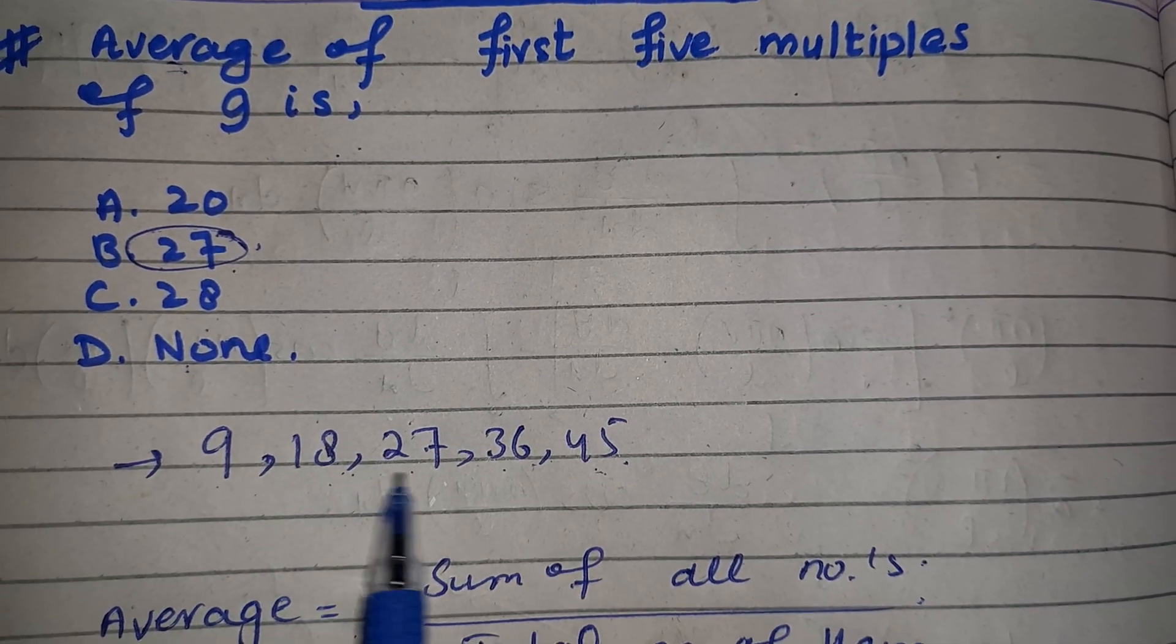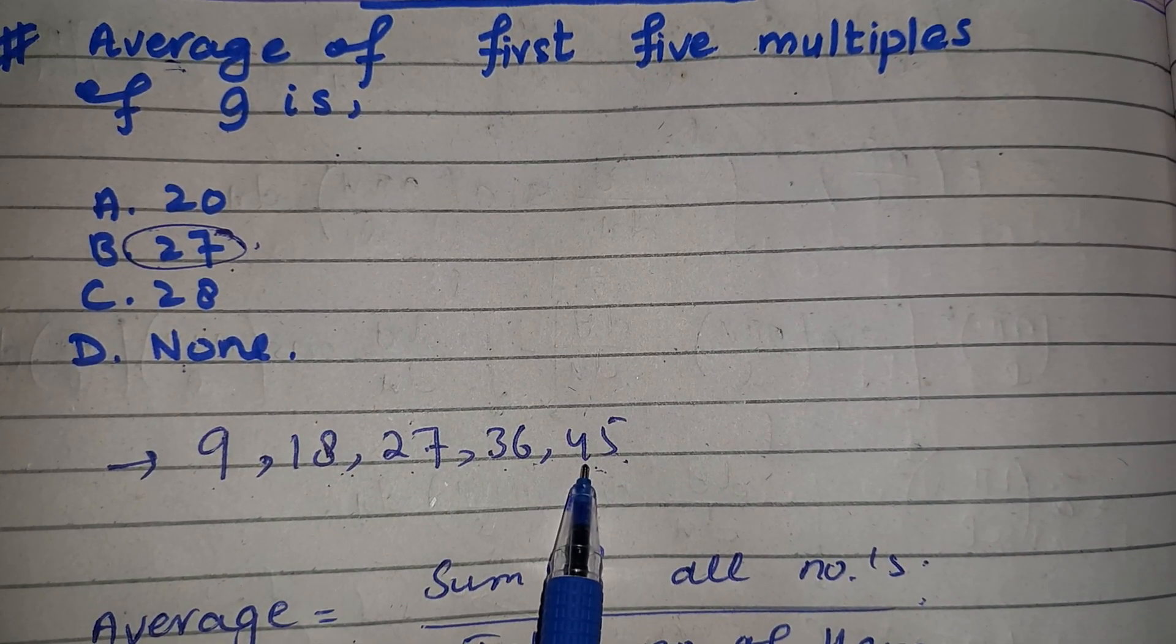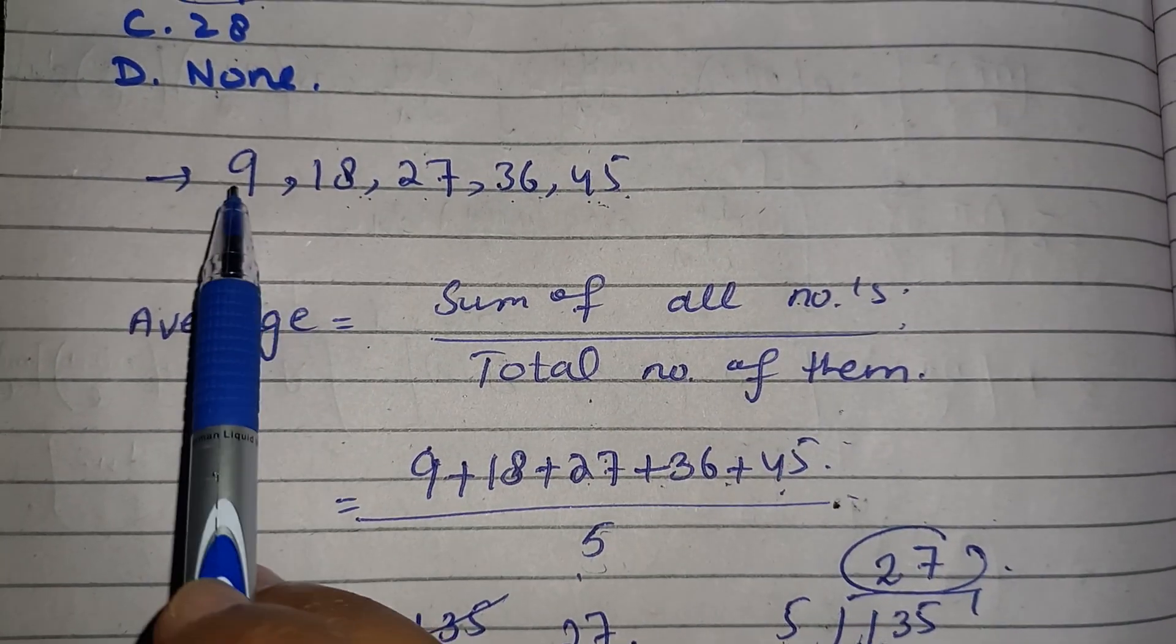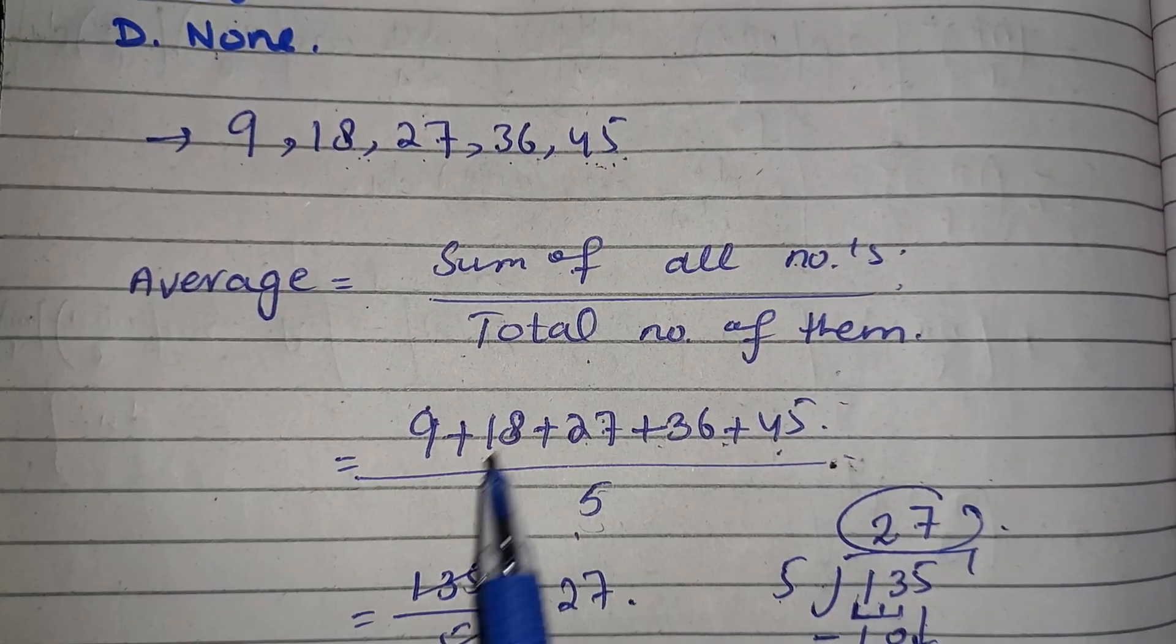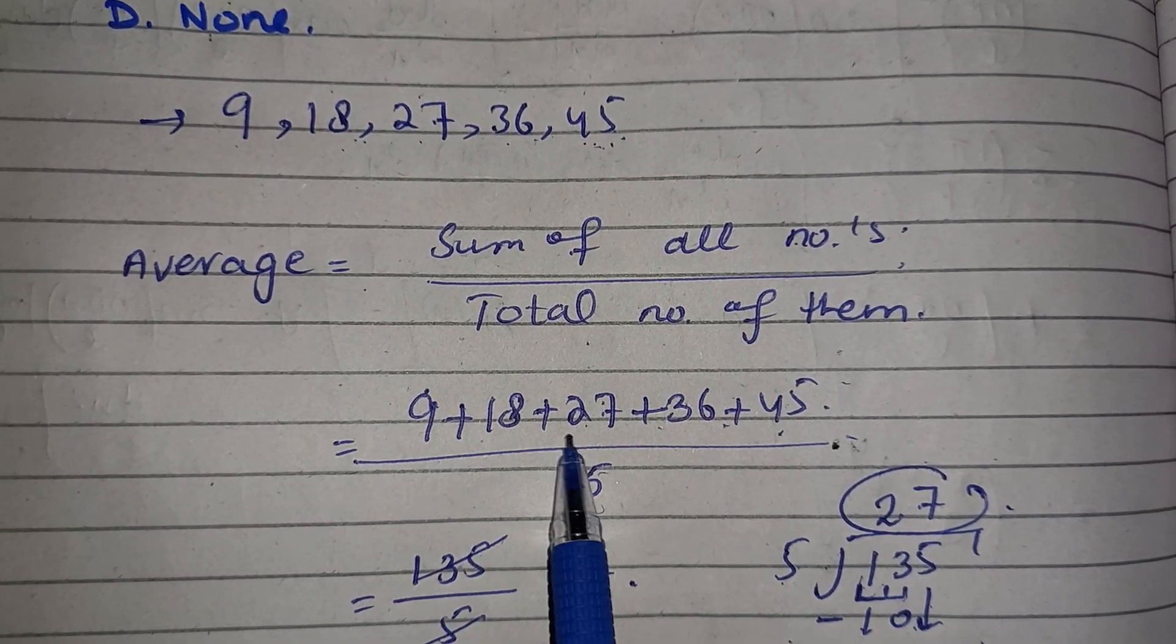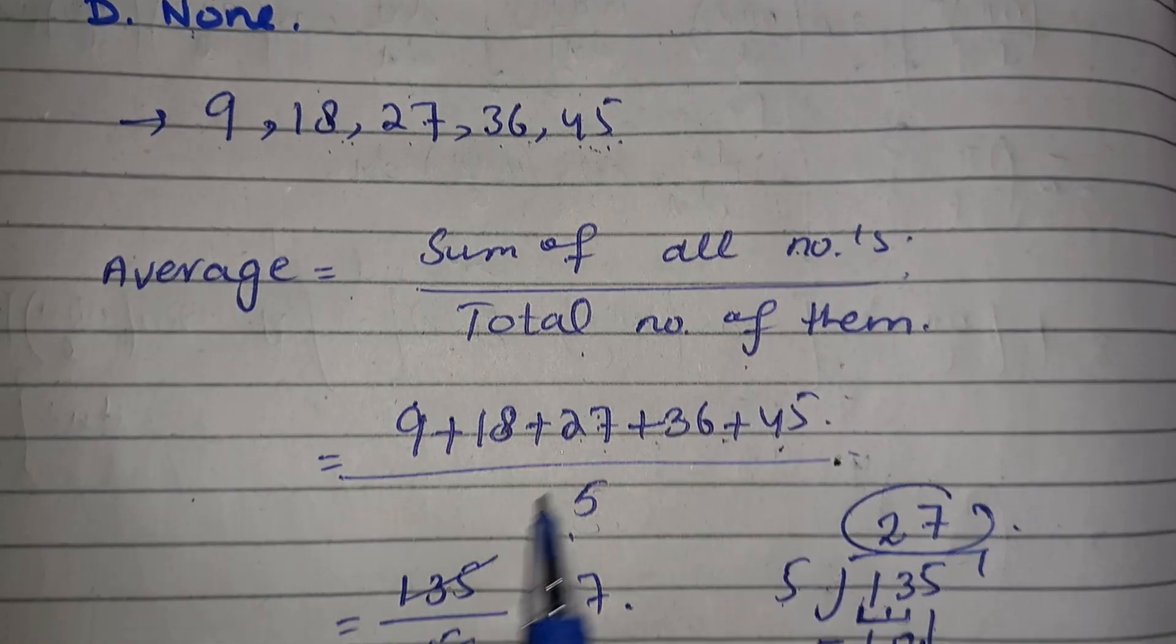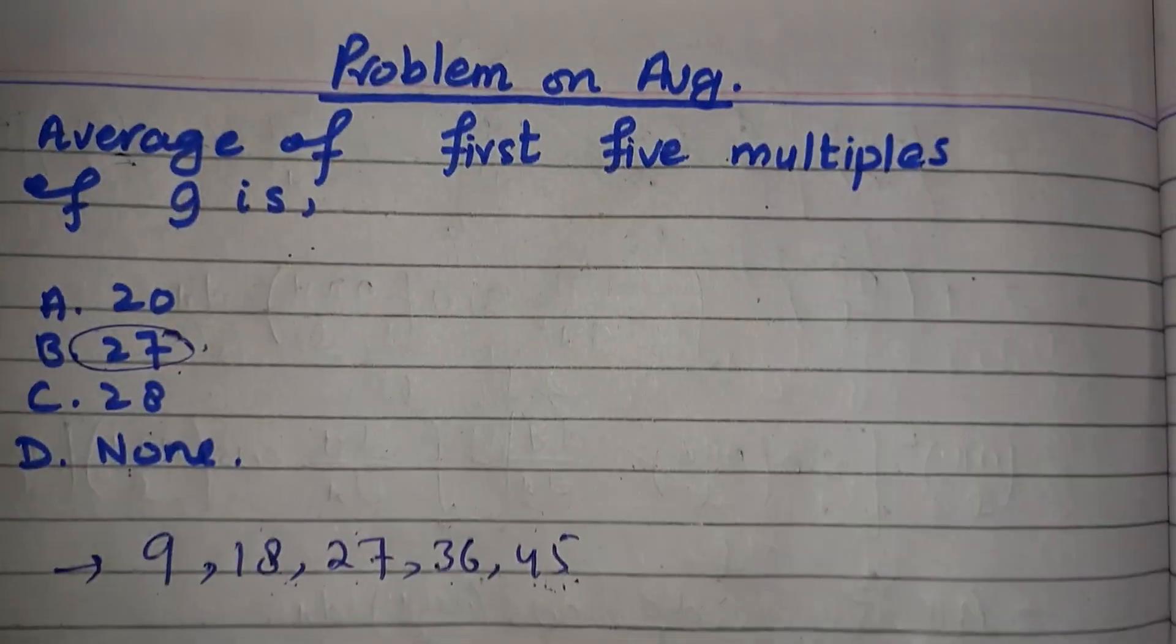Now students, sum of all the numbers means you have to add all of these. So I have written down 9 + 18 + 27 + 36 + 45, divided by total number of them, which are actually five, and this is also given in your question.